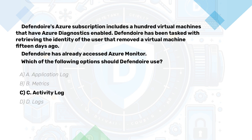To retrieve the identity of the user who removed a virtual machine, you should use the Activity Log in Azure Monitor. The activity log provides records of operations performed on resources in your Azure subscription, including who performed the action, what action was taken, and when it occurred.